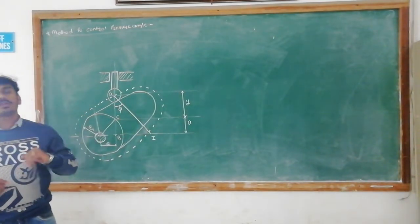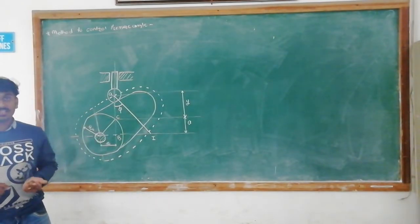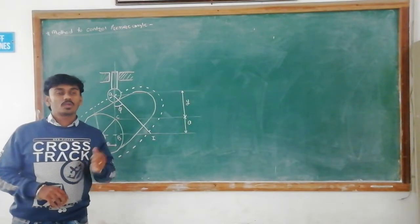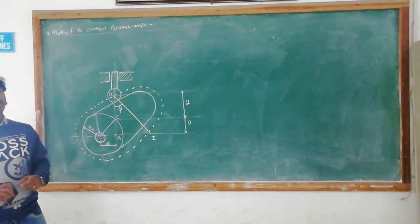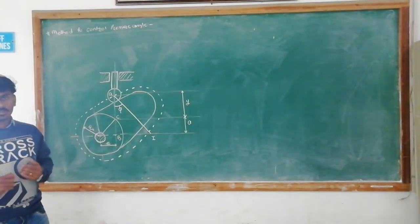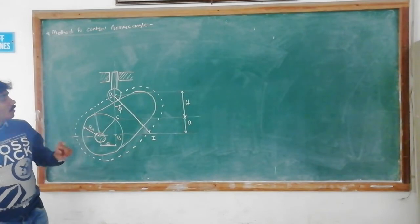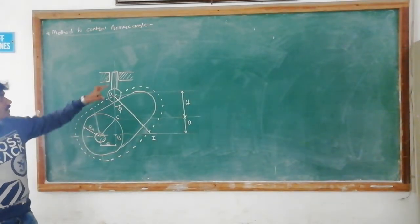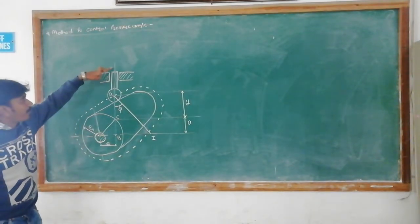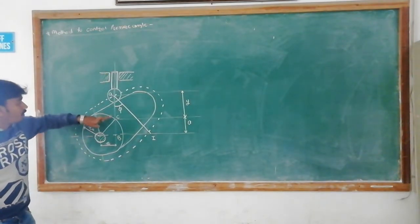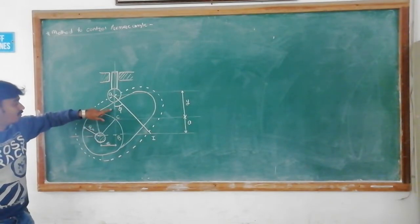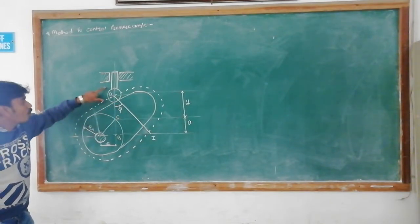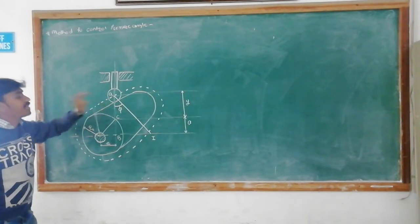First of all we discuss what is pressure angle, what is the need to control the pressure angle, and how we can control the pressure angle. Pressure angle is the angle between the line of action of the follower and the line normal to the pitch curve.